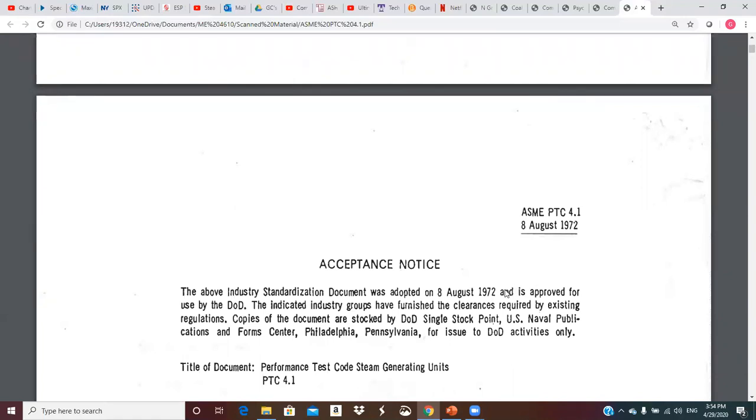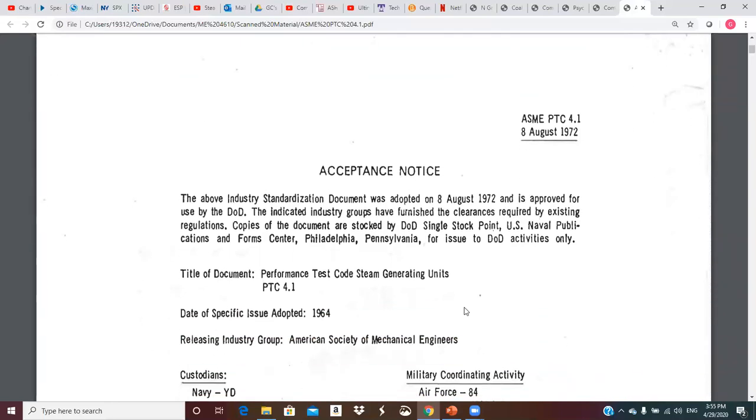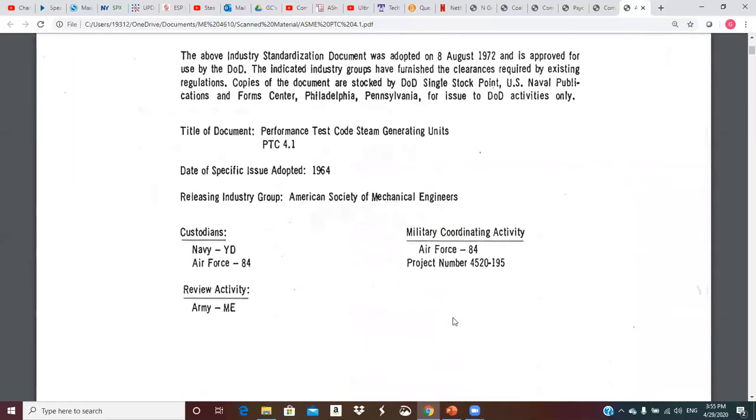This is power test code 4.1, and this is an older version, an outdated version of the performance test code for boilers. This document can be used as a framework for legal actions. For example, if you bought a big boiler from somebody, B&W or General Electric, and you didn't think it operated up to specifications, this document provides a formal test procedure by which you could test that unit.